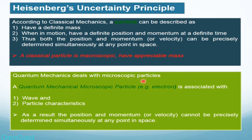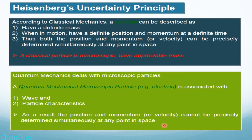A quantum mechanical particle is microscopic — its size is very small — and wave and particle properties are associated with it. Because of this, we cannot simultaneously determine the position and momentum of a quantum mechanical microscopic particle at the same point in space. This is the basic difference: a classical particle is large and its position and momentum can be precisely determined simultaneously, whereas a quantum mechanical particle is microscopic with wave-particle characteristics.